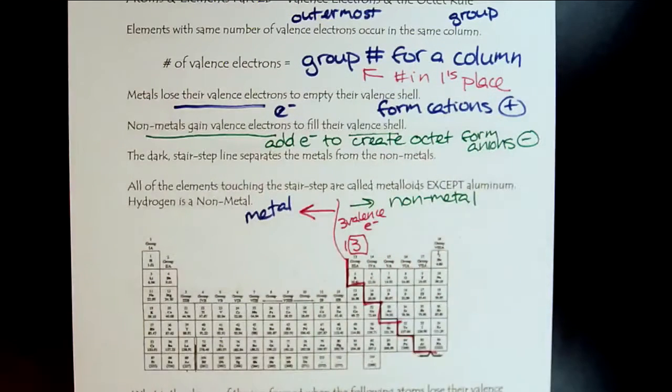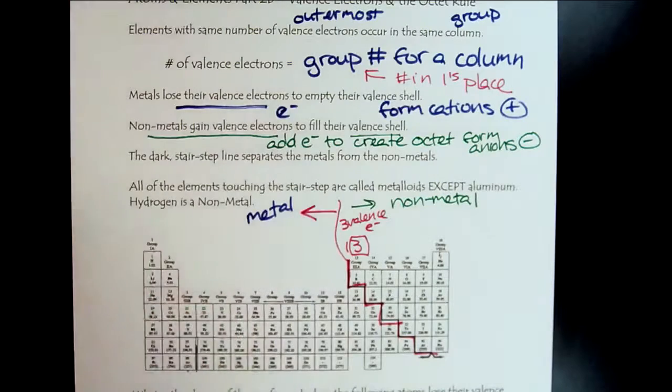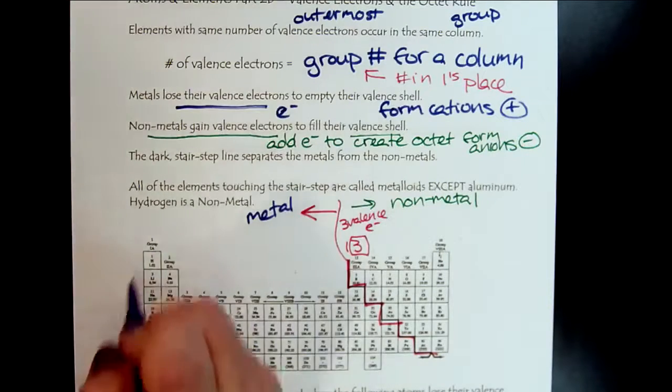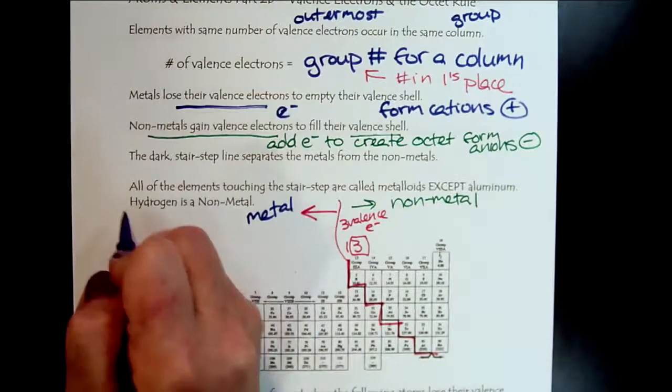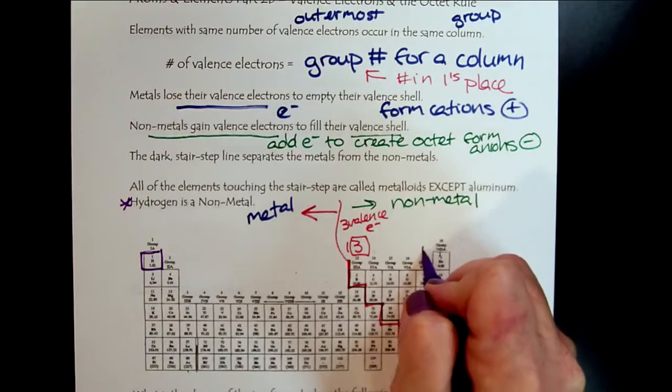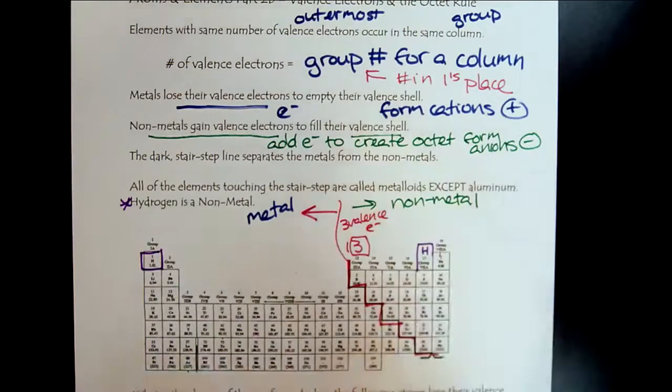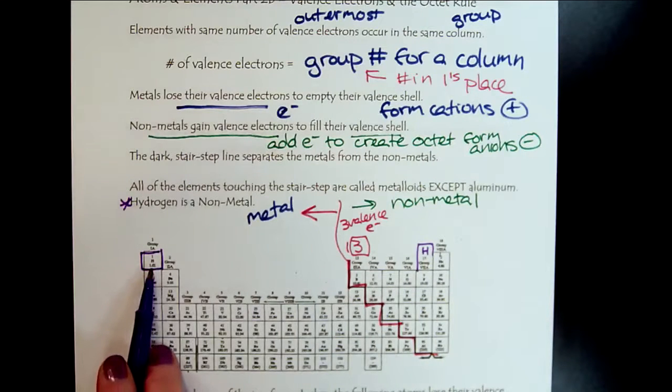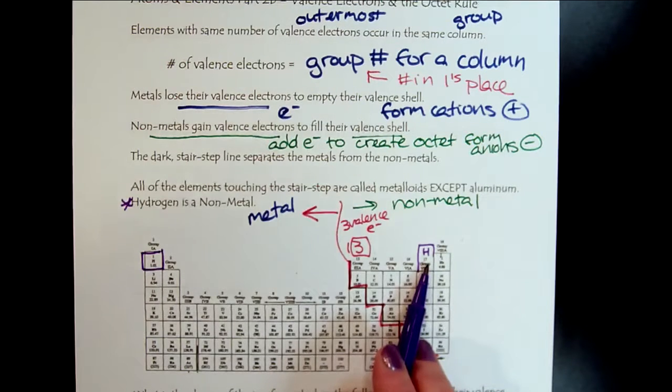Hydrogen is very interesting. We typically show hydrogen here, but it is a nonmetal, so you can also think of hydrogen living over here. It's one of the only elements that can be both a cation and an anion.